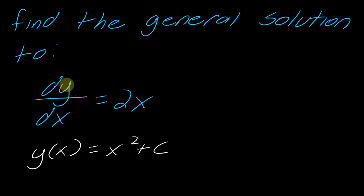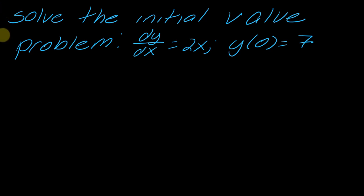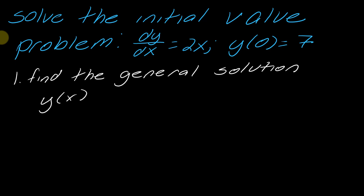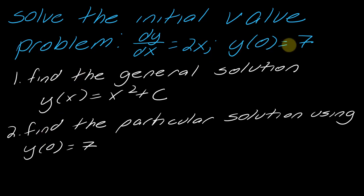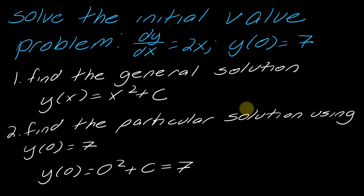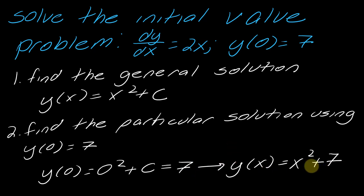Here's the other twist that can come up with a differential equation. Instead of being asked to find the general solution, you could be asked to solve the initial value problem. There are really two parts: first you find the general solution — y of x equals x squared plus C. Next, you find the particular solution using the initial condition. So plugging in: y of 0 equals 0 squared plus C equals 7, which means C equals 7. Therefore, the particular solution is y of x equals x squared plus 7.